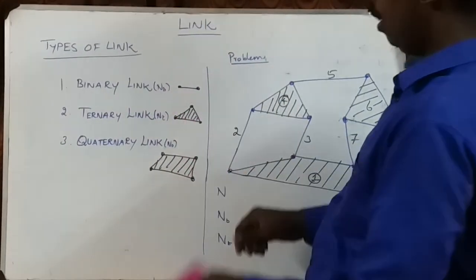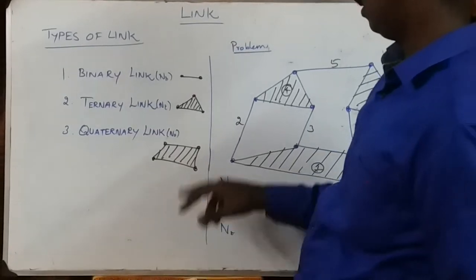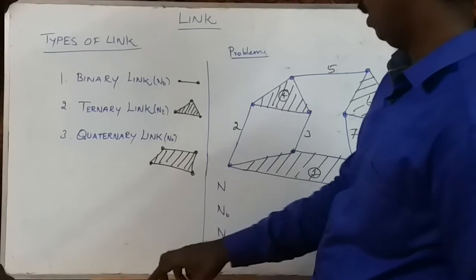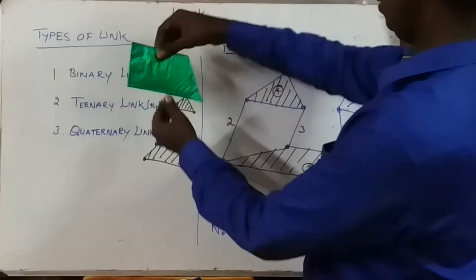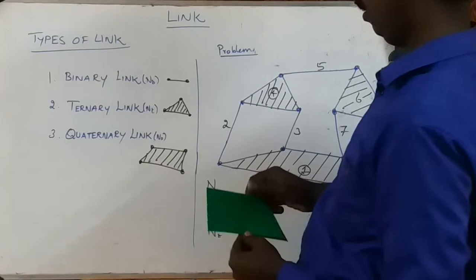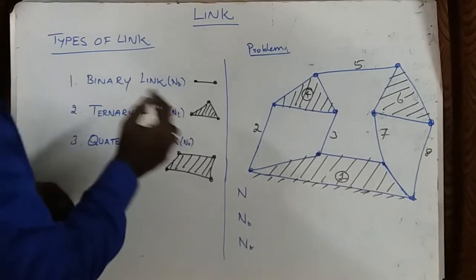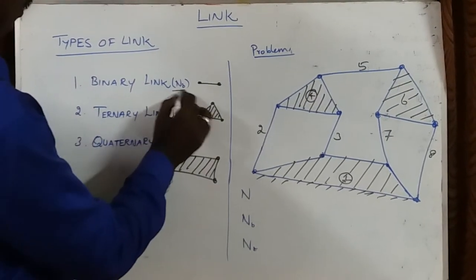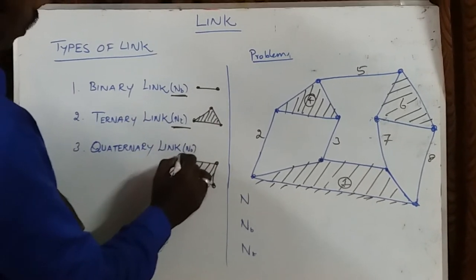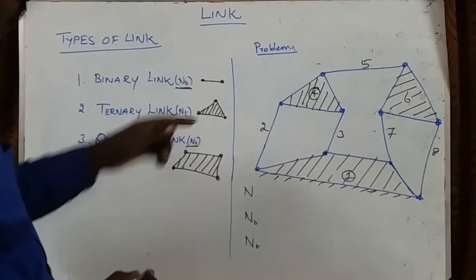Next, a quaternary link means a single link having four ends - one, two, three, and four. This is the example for a quaternary link. The binary link is called NB, the ternary link is called NT, and the quaternary link is called NQ. So we will now solve the problem.